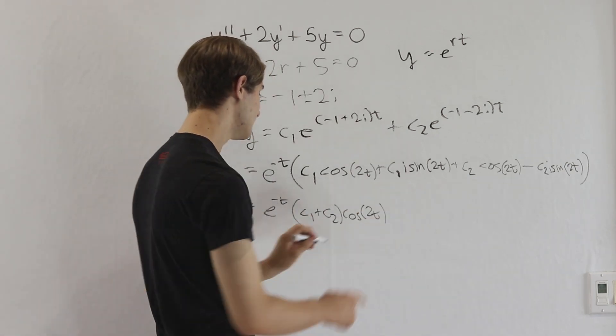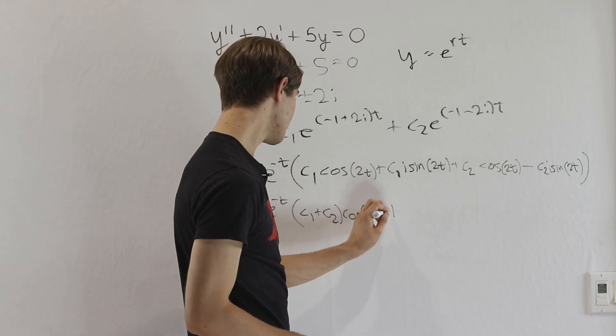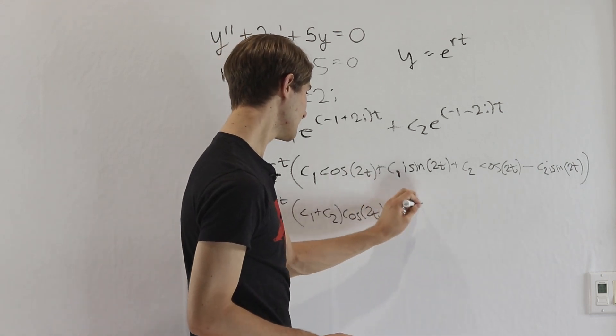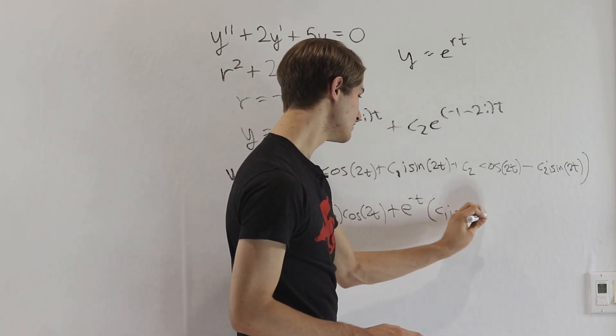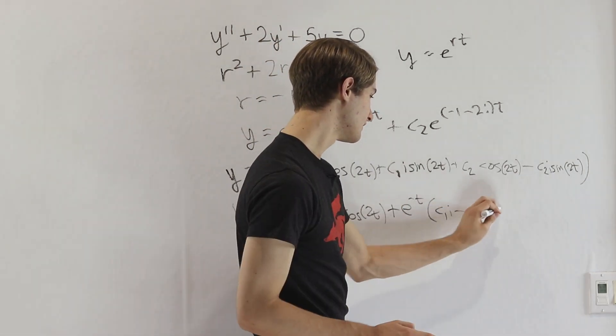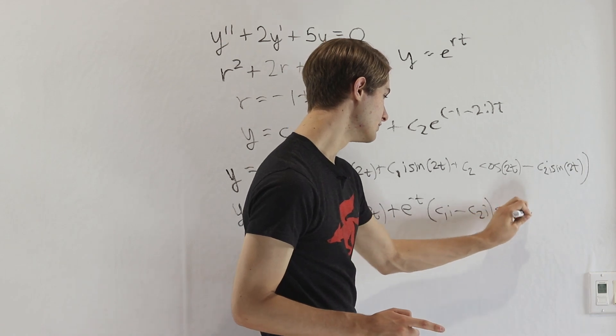And then if we look at the sines, we're going to get plus e to the negative t, and then c1i minus c2i over here times sine of 2t.